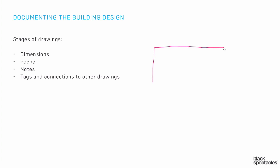I might have an early stage of drawings, kind of in the design drawing mode, where I have a big overall dimension telling me how big the building is. But then as I start building in more information, I'm getting to a spot where I have multiple pieces of dimensional information filling out how I'm thinking about the overall structure. So I'm getting more and more detailed.